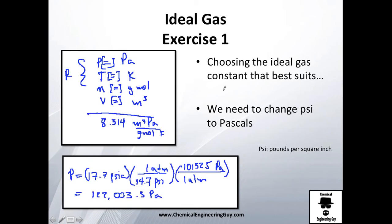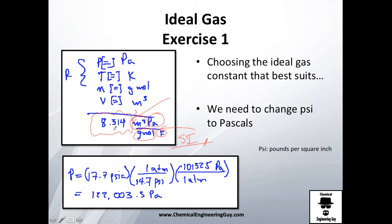For the ideal gas constant R, I recommend this one — 8.31 cubic meters · Pascals per gram-mole · Kelvin. These are all standard SI system units, which is great because if you have all your variables in the International System, you will have a very good time with no mistakes, no errors, and no conversions needed.